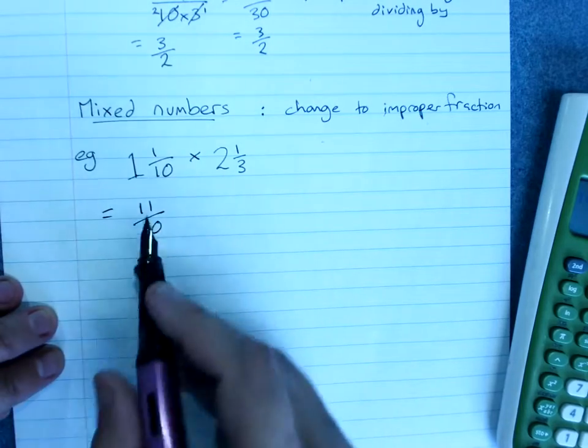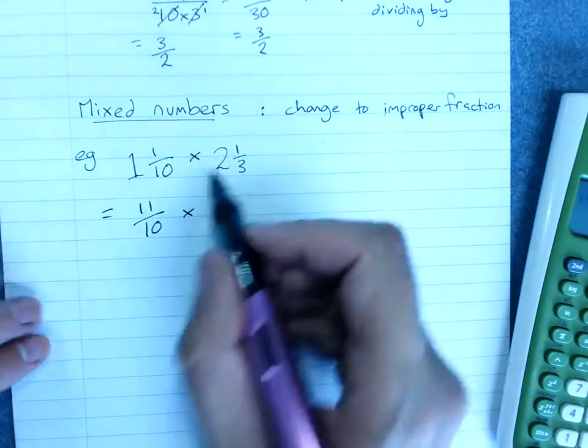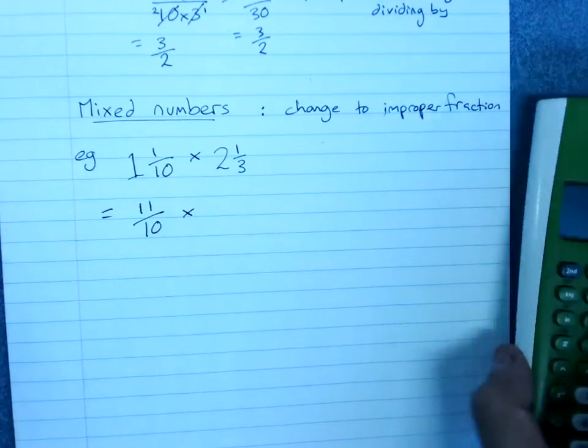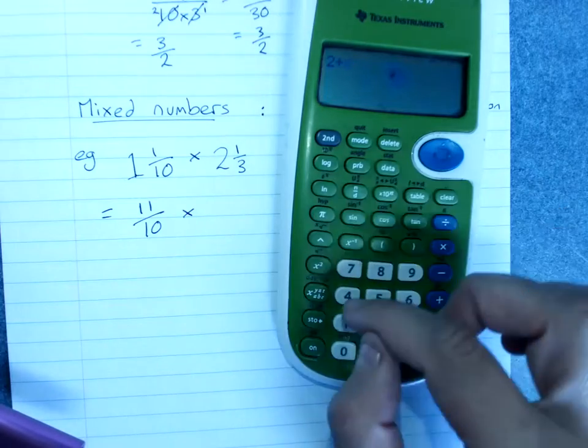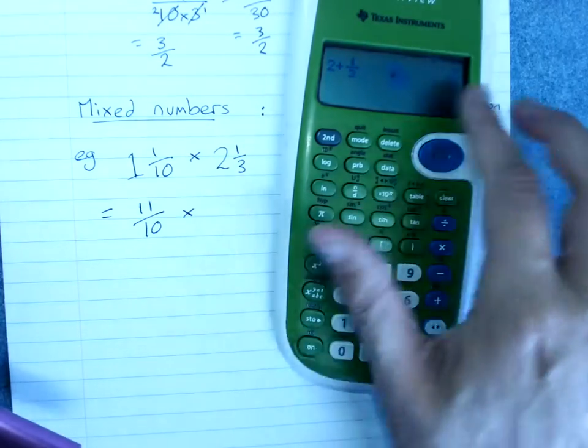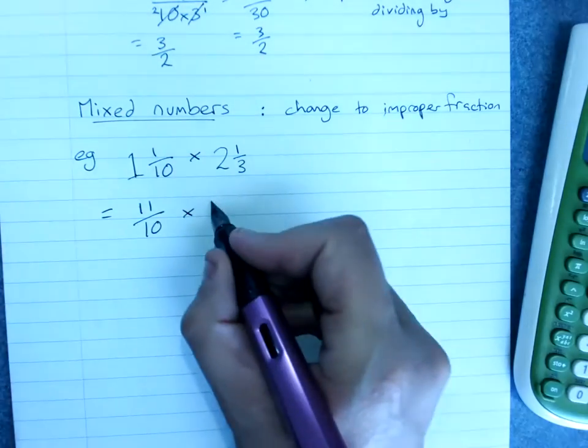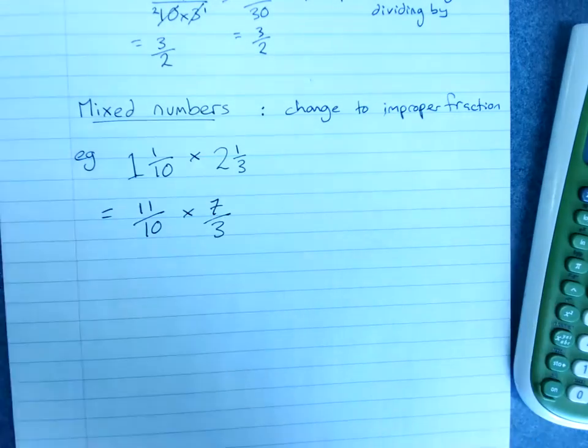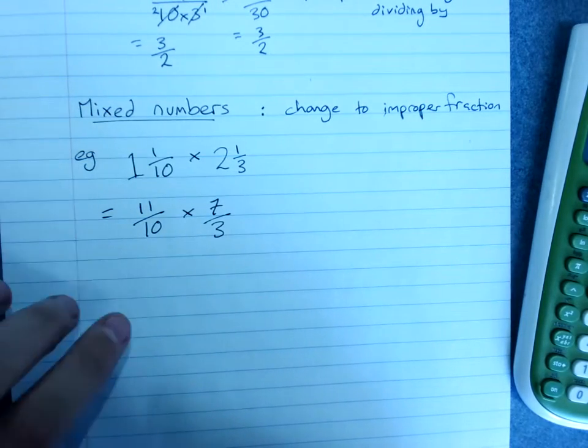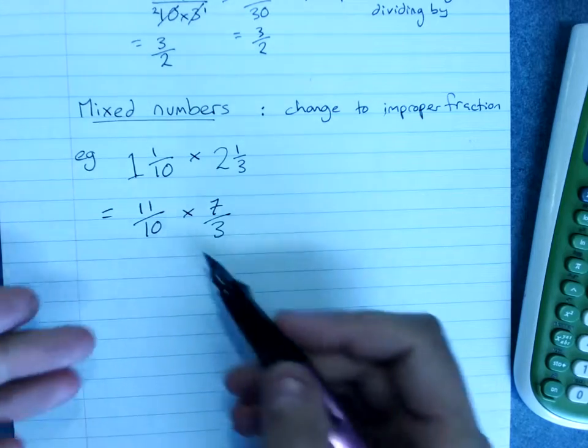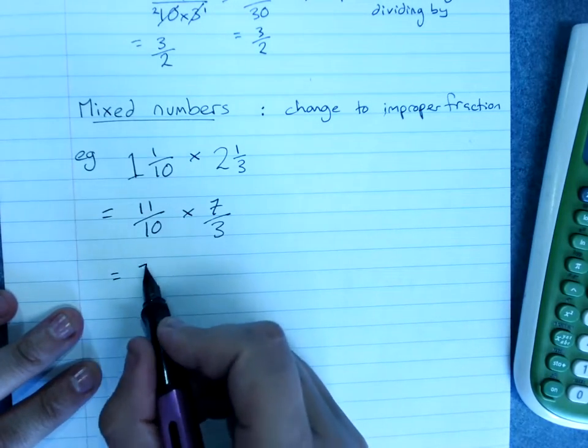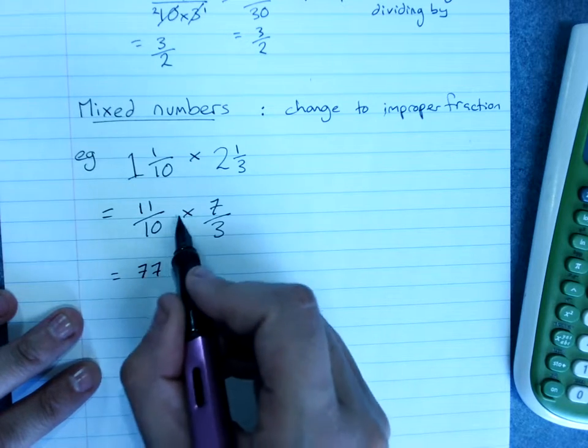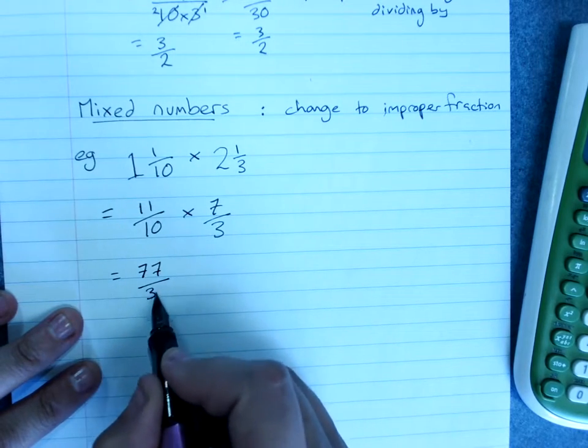If you couldn't remember how to change this to an improper fraction. Times, let's get this one changed. This is 2 and 1 third. 2 plus 1 over 3 is 7 over 3. Much better idea to change anything to a mixed number first, then do the operation. This will be 11 times 7, 77. Over 10 times 3, 30.